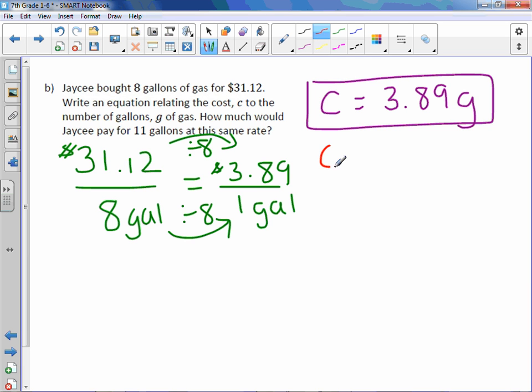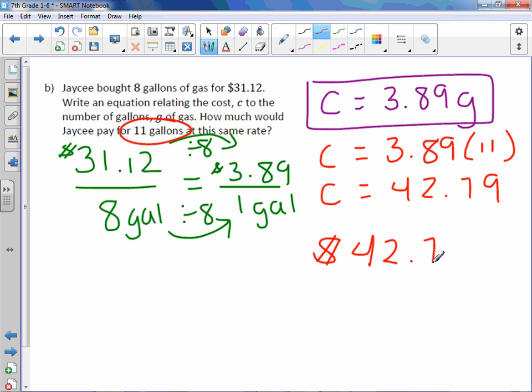From there, we want to know how much 11 gallons would cost. So C equals $3.89 times 11 gallons. Multiply those together and you get $42.79. So it costs $42.79 for 11 gallons of gas.